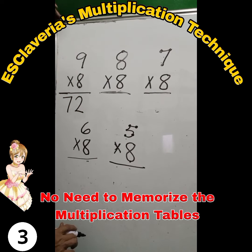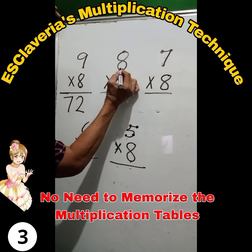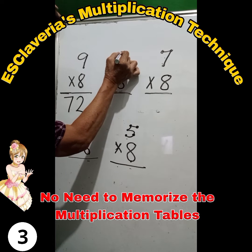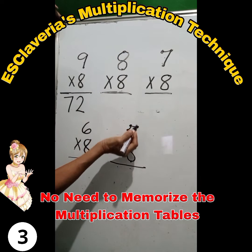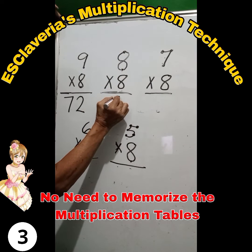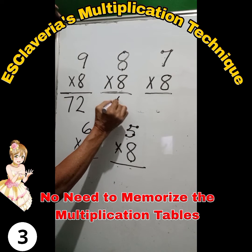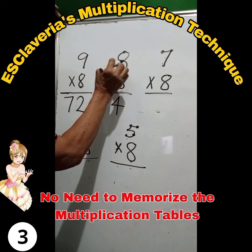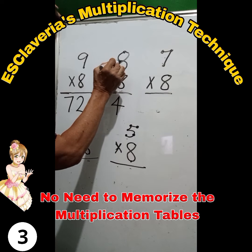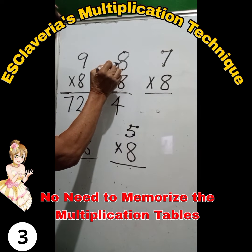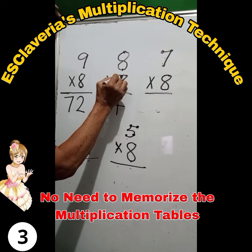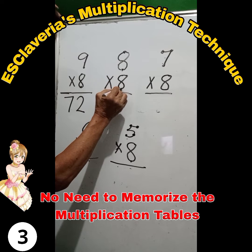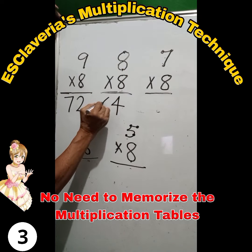8 times 8. Count: 2, 4. Always start from 2. Observe proper alignment. Read the upper number and then go downward: 8, 7, 6. The answer is 64.